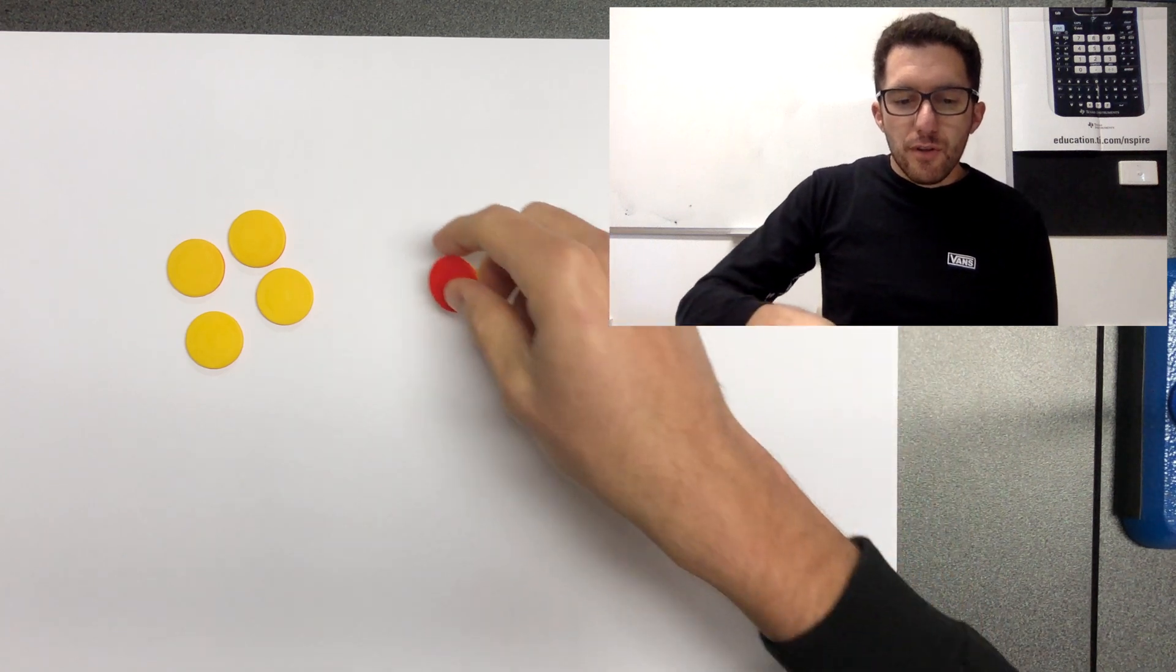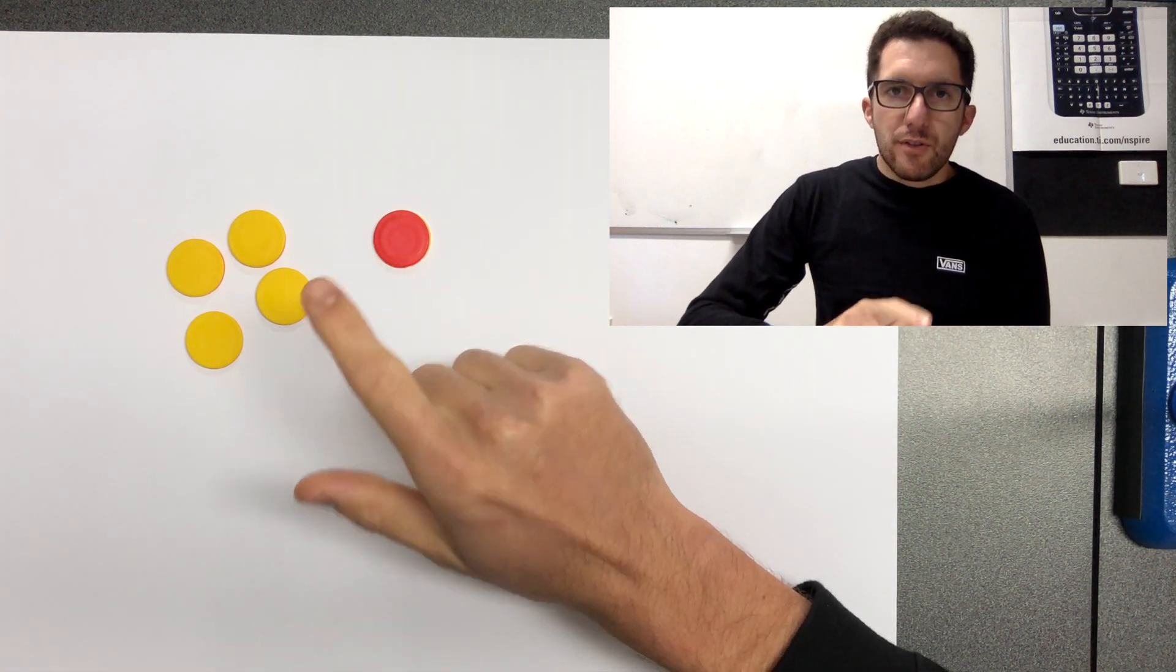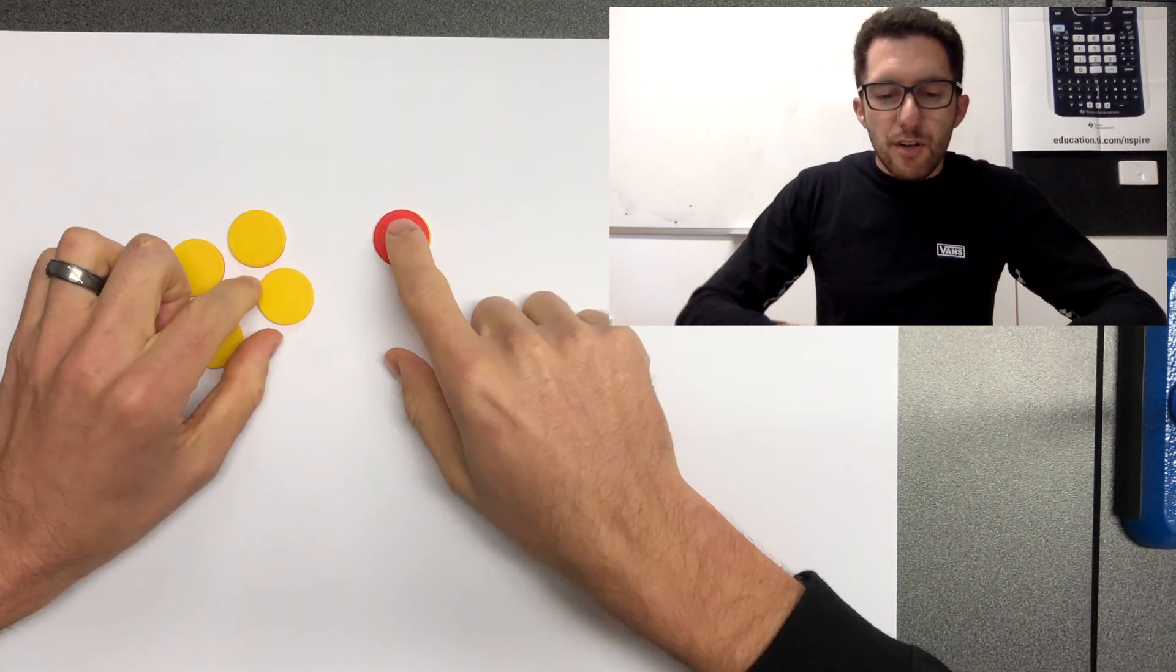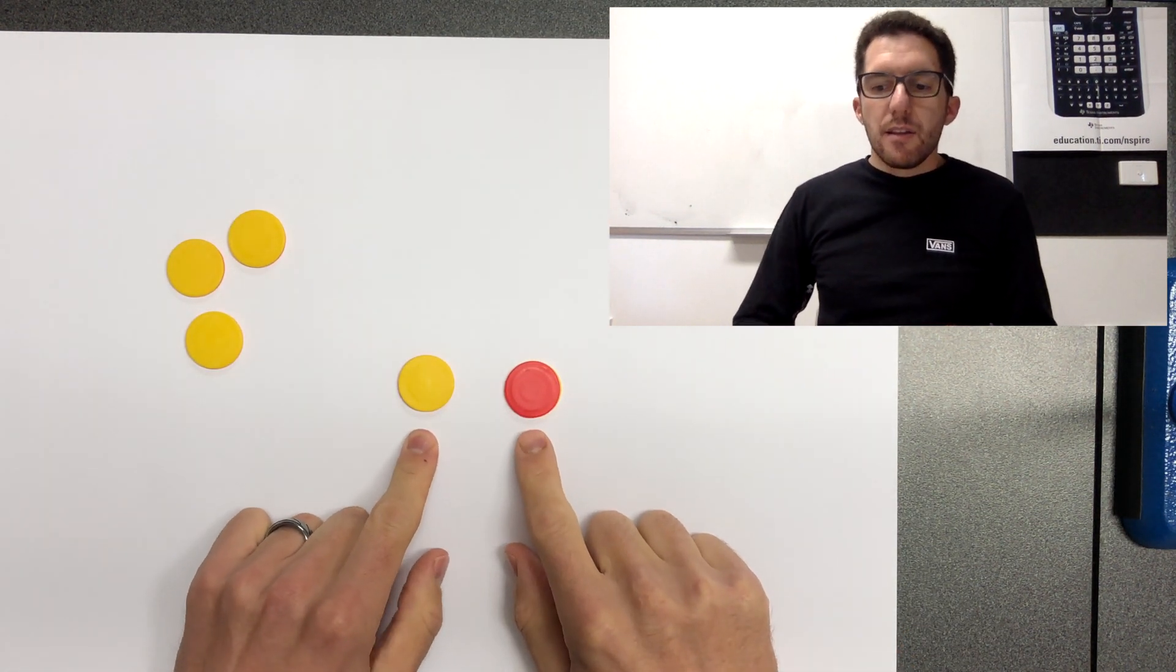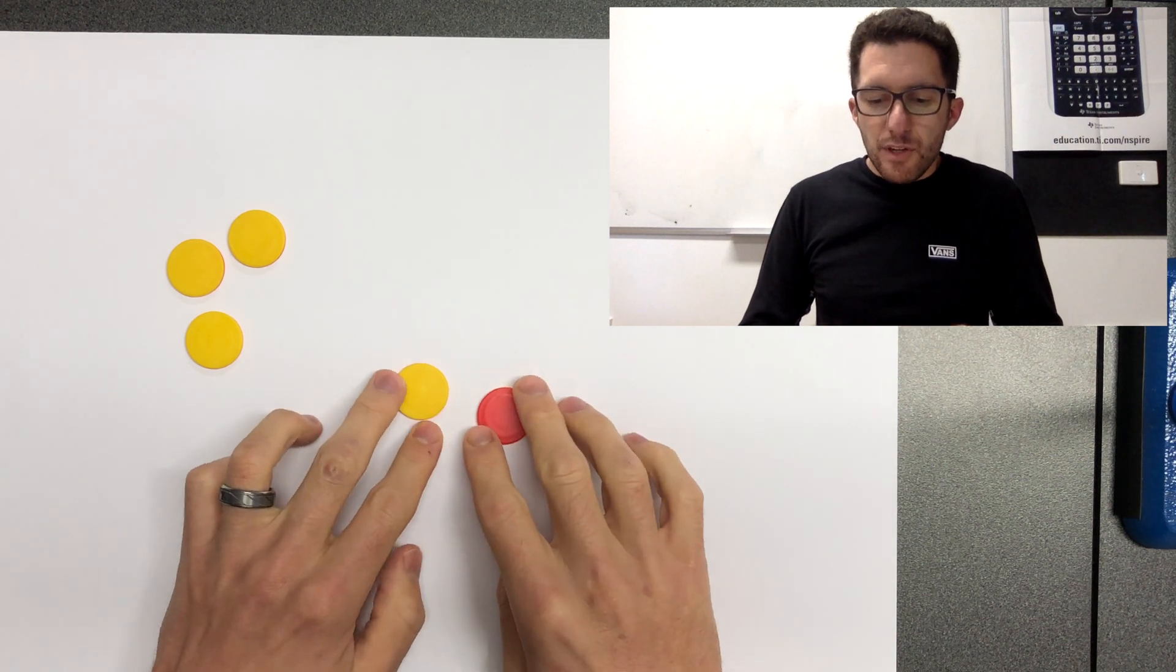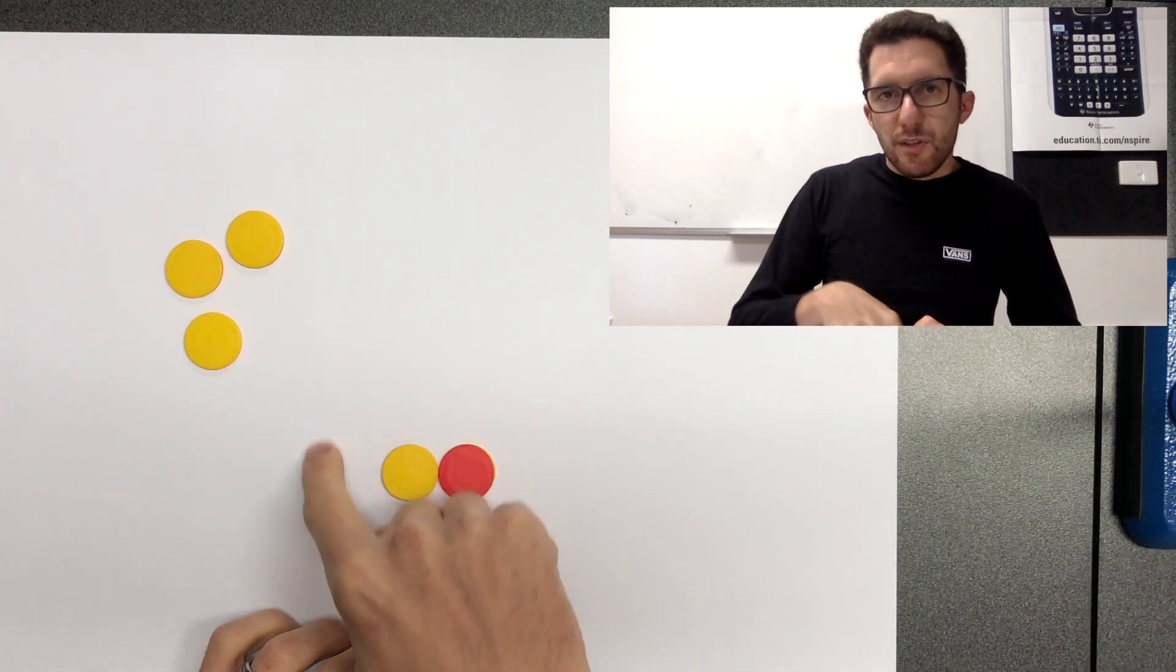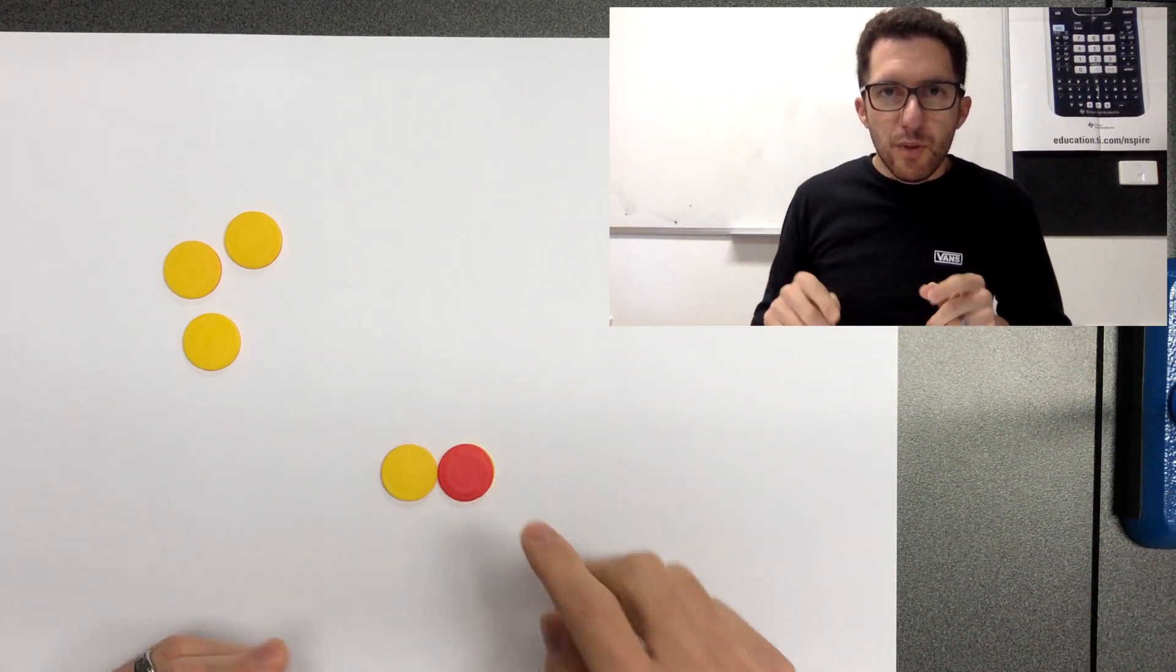I'd like to introduce this red tile. And this red tile is the reverse of a yellow tile, it's the negative of a yellow tile. So if we put a red tile and a yellow tile together, they cancel each other out. And we call this a zero pair because together they both equal zero.